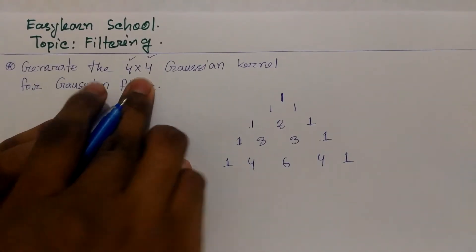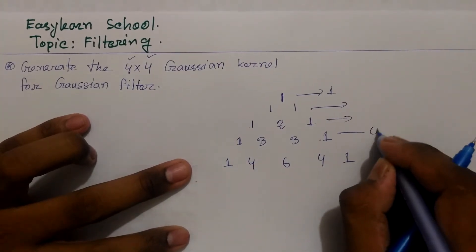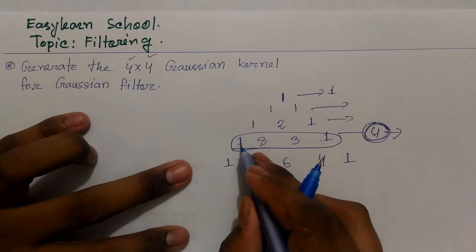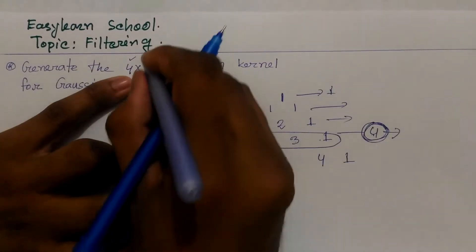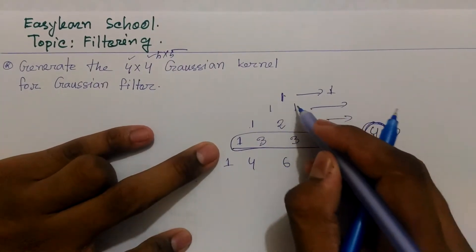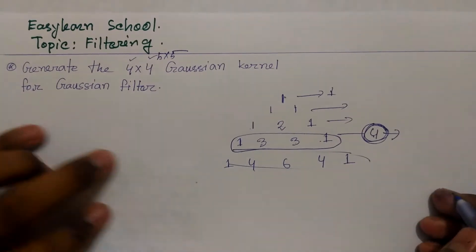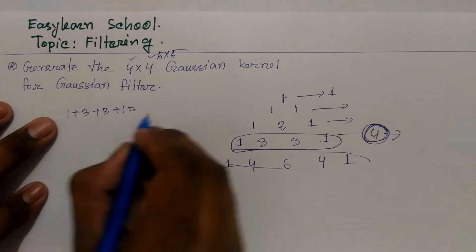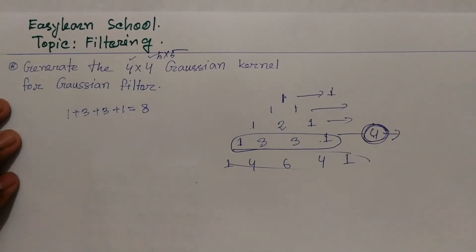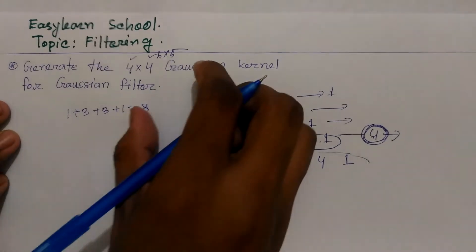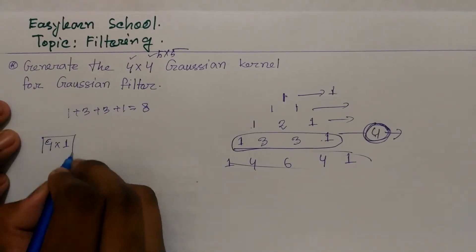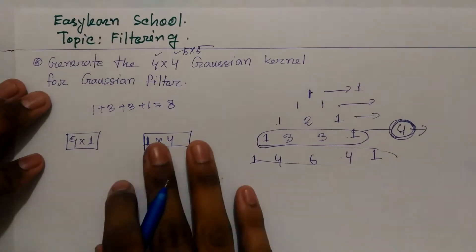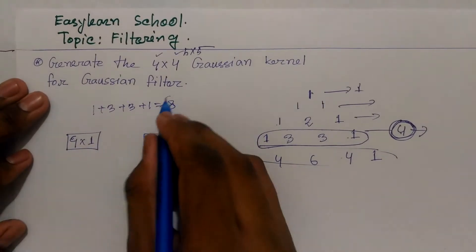For the 4x4 Gaussian kernel, we use the binomial approach. The row values we find are: 1, 3, 3, 1. We need to find which values are finite. I have to separate the Gaussian kernel — separating the system into a 4x1 and 1x4 form. So 1x4 and 4x1 gives us 1x8.